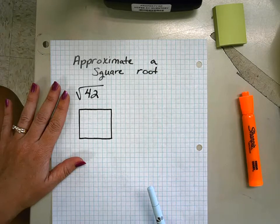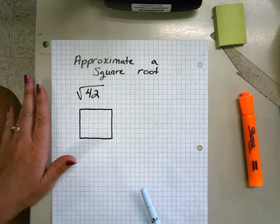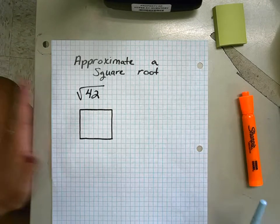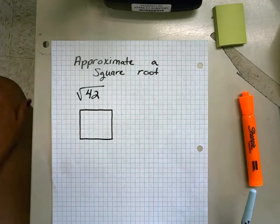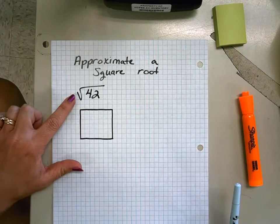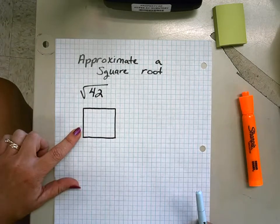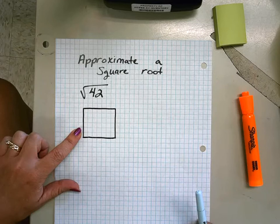This method will incorporate fractions, which we know are our friends. As an example, I want to do with you the square root of 42. Your first step is to, on your graph paper (and I will always have graph paper for you), go ahead and draw a grid.